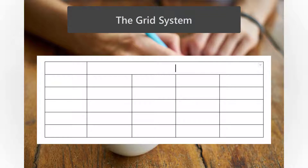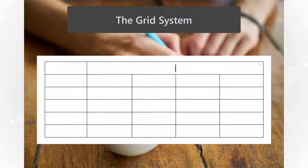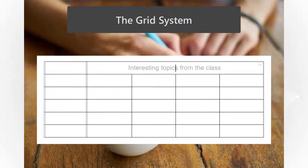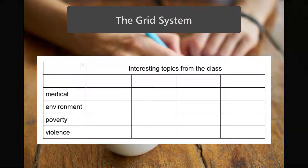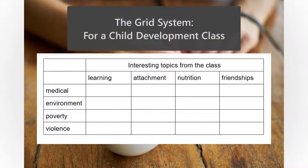One method for doing this for any subject is to draw a grid. Think of four topics in your course content that you have found interesting, and four other things from the previous list, such as demographic groups, social issues, perhaps time periods, whatever seems appropriate.